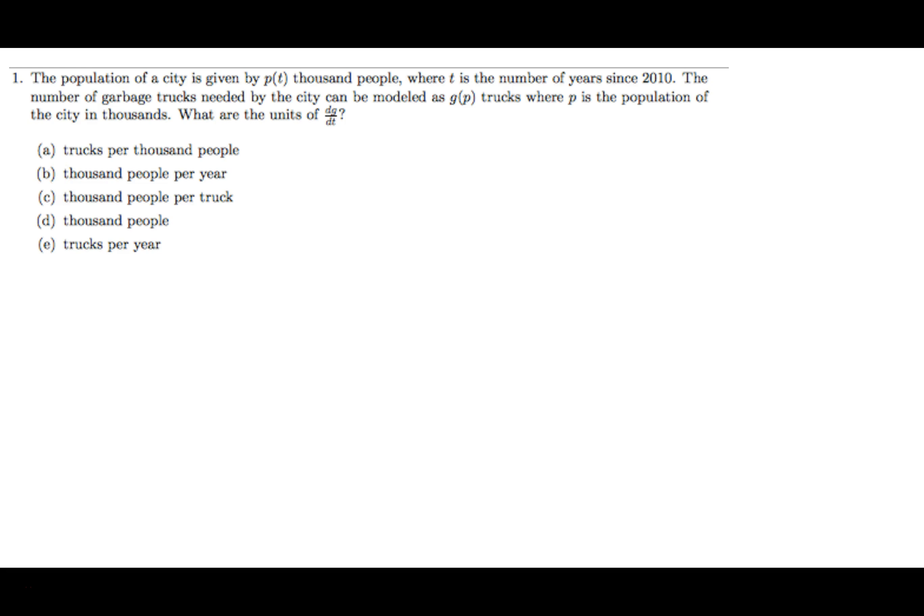Okay, this is a calculus exam review. We have the population of a city is given by P of T and the units are thousand people. So P, the units for P are thousands of people. T, the units in T is number of years since 2010.